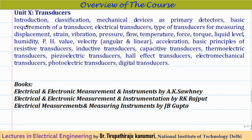After that, we will cover electronic and digital instruments, including the electronic voltmeter, digital voltmeter, digital multimeter, LCR meter, and Q meter. Then Module 10 covers transducers: classification of transducers, mechanical devices as primary detectors, basic requirements of transducers, and electrical transducers for measuring displacement, strain, vibration, pressure, flow, temperature, force, torque, liquid level, humidity, pH value, velocity, and acceleration.